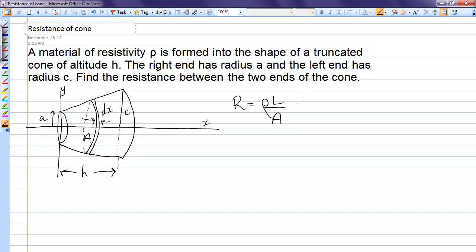So in order to turn that into an integral, the length becomes a little bit of length, dx, but the area remains a finite value. So that area now is a function of x, so it cannot come out of the integral. Rho is constant though, so it can come out. So we're trying to integrate dx over A.